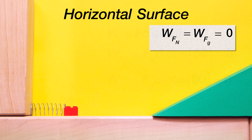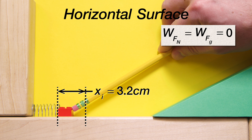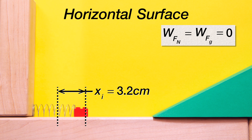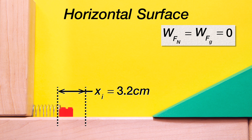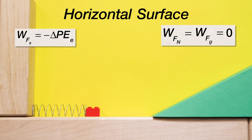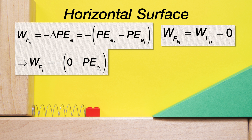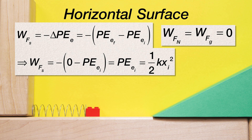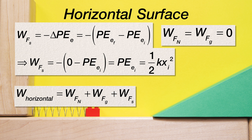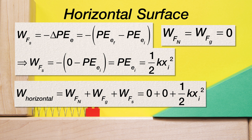Because the force caused by the spring is not constant, we need to solve for the work done by the force of the spring a bit differently. As the block is being pushed by the spring, the spring loses elastic potential energy; that loss in elastic potential energy equals the work done by the force of the spring on the block. The work done by the spring equals the negative of the change in elastic potential energy of the spring, or the negative of the quantity final elastic PE minus initial elastic PE. Because the block is not on the spring at the final position, the final elastic PE is zero. Therefore, the work done by the spring on the block equals the initial elastic PE, which is one-half times the spring constant times the initial compression squared. The net work on the horizontal surface is then just the work done by the force of the spring.